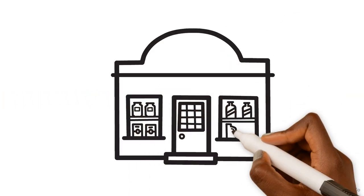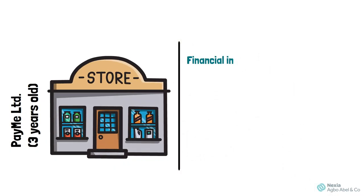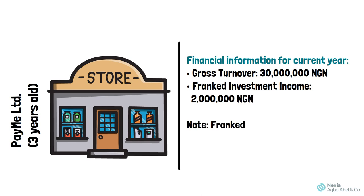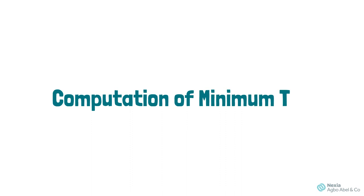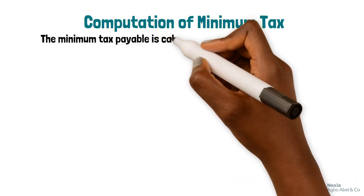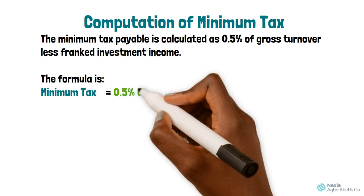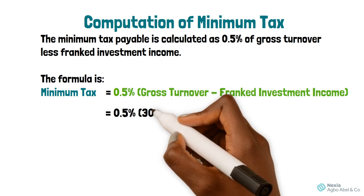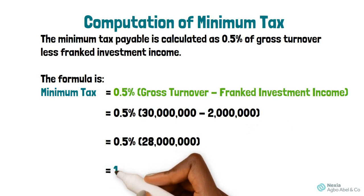Let's say Pay Me Limited is a small manufacturing company that has been in operation for three years. For the current year of assessment, Pay Me Limited has the following financial information: gross turnover of 30 million naira and franked investment income of 2 million naira. Note that franked investment income includes income that has already suffered tax at source, like dividends. The minimum tax is calculated at 0.5 percent of gross turnover less franked investment income: 0.5% × (30 million − 2 million) = 0.5% × 28 million = 140,000 naira.